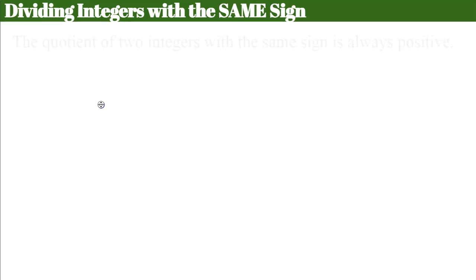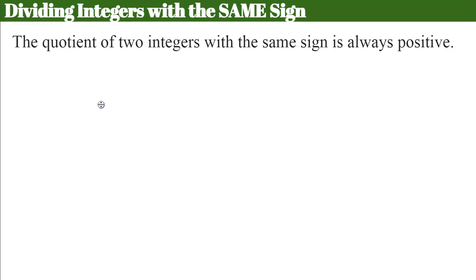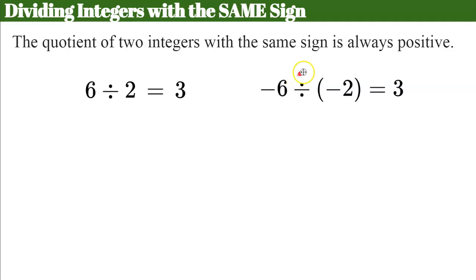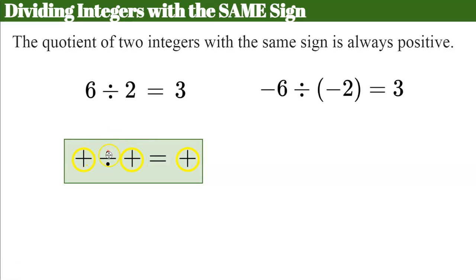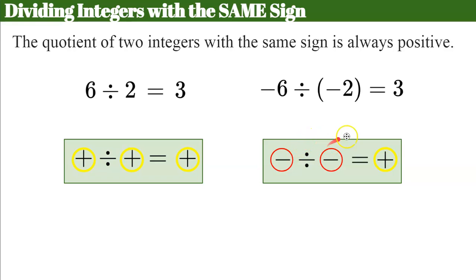Here is our first of two rules: dividing integers with the same sign. The quotient of two integers with the same sign is always positive. For example, 6 divided by 2 gives a positive 3. Negative 6 divided by negative 2 — they're both negative, same sign — gives a positive quotient of 3. A positive divided by a positive: same sign, positive quotient. A negative divided by a negative: same sign, positive quotient. This is the same rule as multiplying integers with the same sign — if you multiply or divide integers with the same sign, your product or quotient will be positive.